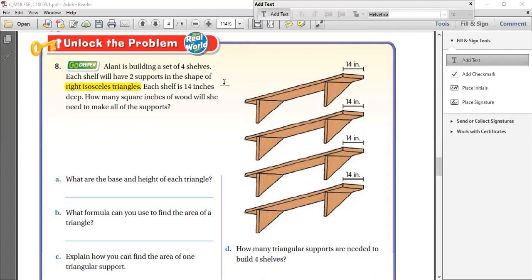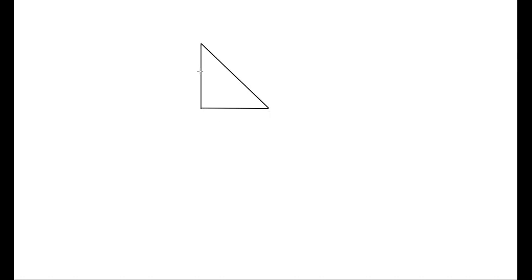An isosceles triangle is a triangle which has two equal sides. Let me show you how an isosceles triangle looks. An isosceles triangle looks exactly like this — and they said it's a right isosceles triangle. This side and this side are equal. If this side is 5, this side is also going to be 5. If this side is 3 cm, this side is also 3 cm. Only these two sides are equal. And because it's a right isosceles triangle, this angle is going to be a right angle — that's 90 degrees. So this is how a right isosceles triangle looks.